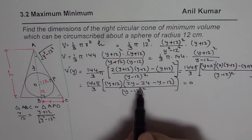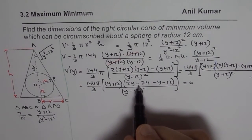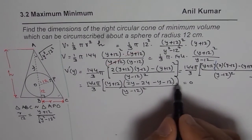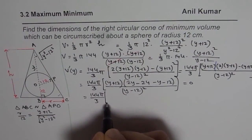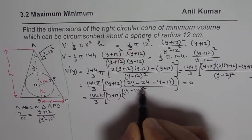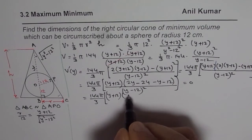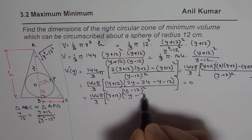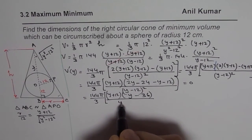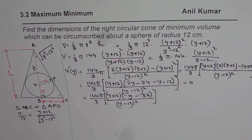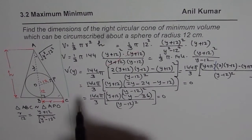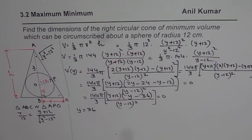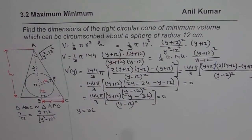For the critical number, the derivative must equal zero. Since the numerator contains (Y plus 12)(Y minus 36), setting Y minus 36 equal to zero gives Y equals 36. So Y equals 36 is our critical number.